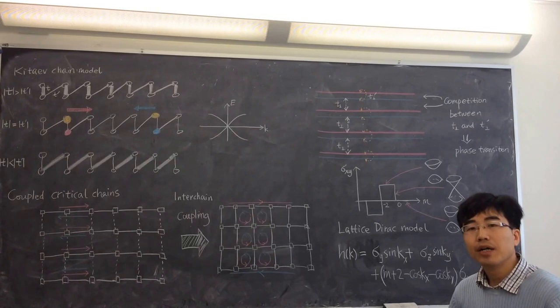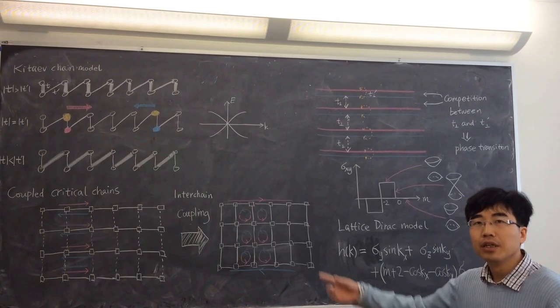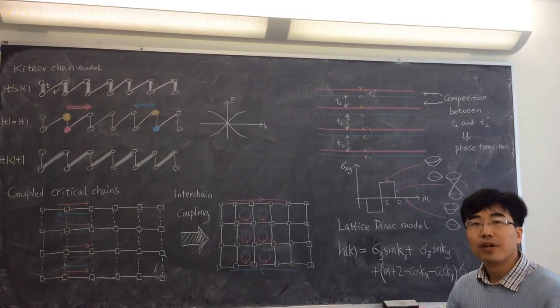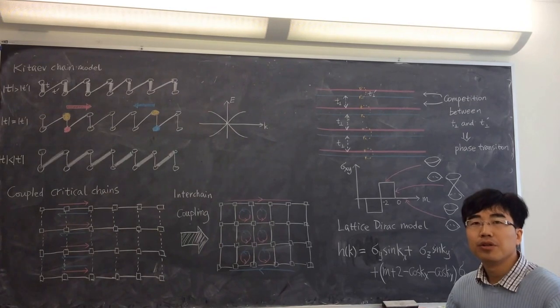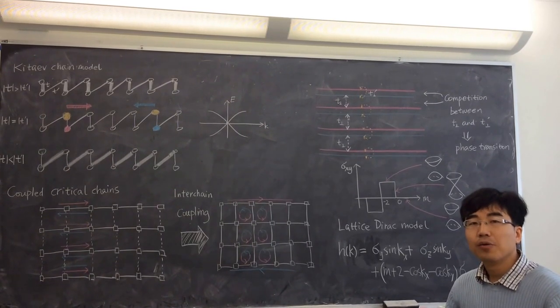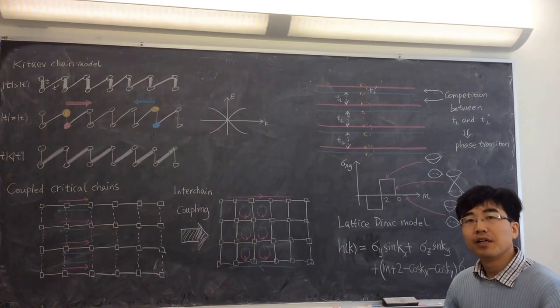The chiral edge states cannot exist by itself in one dimension. As you see in the one dimensional chain model, there is always left mover and right mover. This is a very general principle that it's not possible to have only left mover in the system. So the only way to realize only left mover is on the boundary of a higher dimensional state.